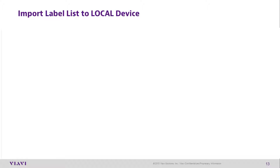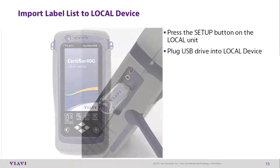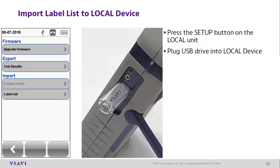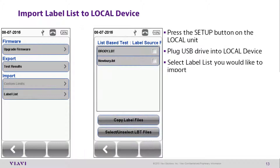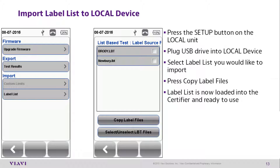To import label lists to the local device, press the Setup button on the local device and plug the USB drive into the device. Select the label list you want to import, then press Copy Label Files. The label list is now loaded onto the certifier and ready to be used.